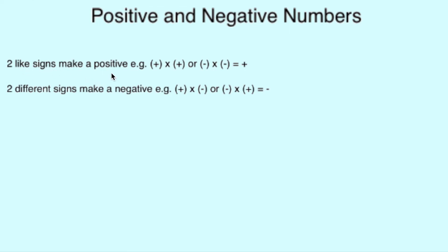Two like signs make a positive. For example, a positive number times a positive number makes a positive, or a negative number times a negative number makes a positive.